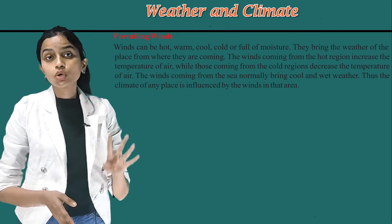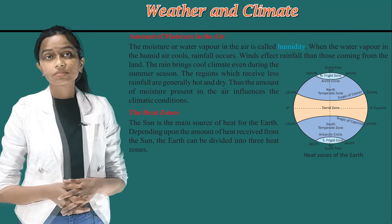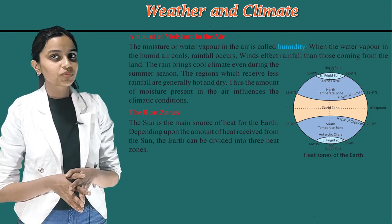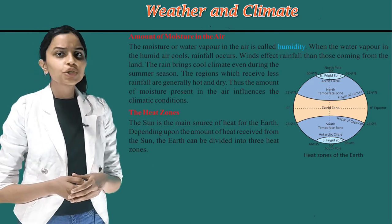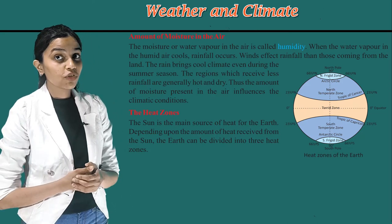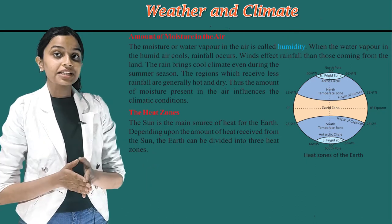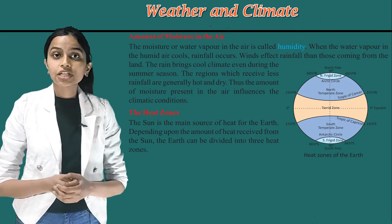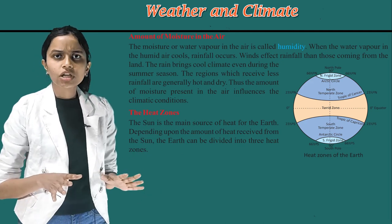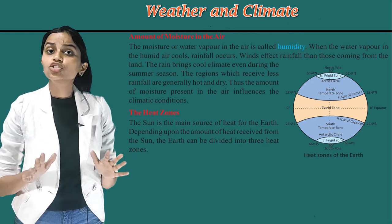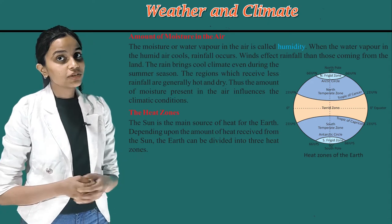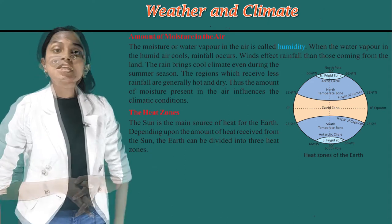The fifth factor is the amount of moisture in the air. The moisture or water vapor in the air is called humidity. When the water vapor in the humid air cools, rainfall occurs. Winds from the sea bring more rainfall than those coming from the land. The rain brings cool climate even during the summer season. The regions which receive less rainfall are generally hot and dry. Thus, the amount of moisture present in the air influences the climatic conditions.